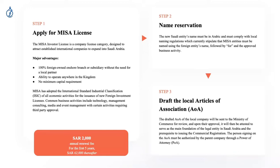Step three is drafting the local articles of association. We help draft all of these, knowing exactly what can and cannot be removed. This makes the approval and attestation process much simpler. Even changing one thing incorrectly can mean going through the entire approval and attestation process again without being told what went wrong — experience is key here.